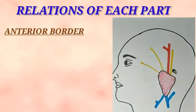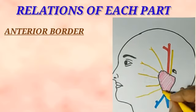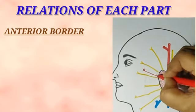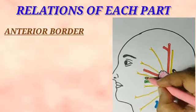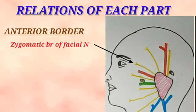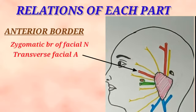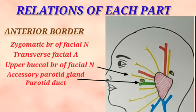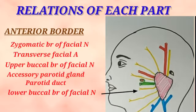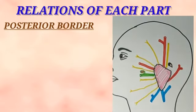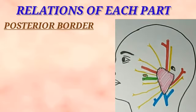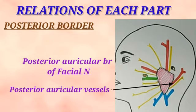The anterior border of the parotid gland is a thin border separating the superficial surface from the anteromedial surface. From above downwards it is related to: the zygomatic branch of the facial nerve, the transverse facial vessels, the upper buccal branch of the facial nerve, the accessory parotid gland along with the parotid duct, the lower buccal branch of the facial nerve, and the marginal mandibular branch of the facial nerve. The posterior border separates the superficial surface from the posteromedial surface and is related to the posterior auricular branch of the facial nerve and the posterior auricular vessels.